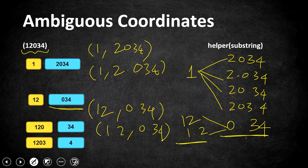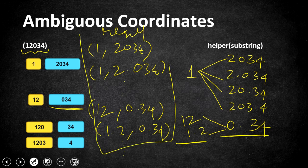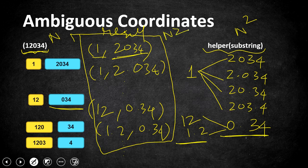The final split is '1203' and '4'. This is the last possible split. All the processed strings are added to our final result list and returned. Regarding time complexity: splitting the string takes O(n) time, the helper method runs in O(n²) processing all substrings, and the cross-combination also takes O(n²), giving an overall time complexity of O(n³).